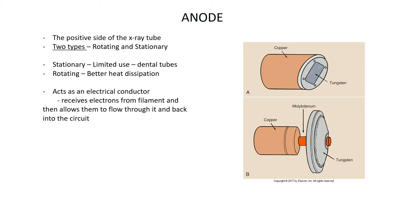The anode acts as an electrical conductor. It receives the electrons from the filament and then allows them to flow through it and back into the circuit. Remember, a circuit has to be a closed path. You have the filament, then a gap, then the anode. When you push the exposure button, the electrons are boiled off the filament, travel across the gap, and strike the anode — where heat and x-rays are made. Then the electrons travel back into the circuit.